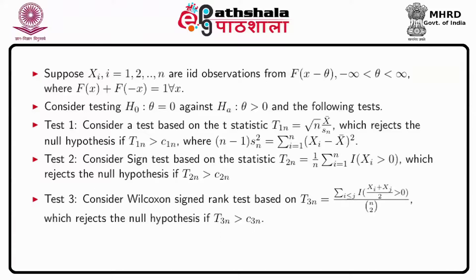For this testing problem we have three types of tests. The first is based on T1_n equal to root n times x-bar divided by s_n, which rejects the null hypothesis that theta equals 0 against theta greater than 0 when T1 is greater than C1_n, where (n minus 1) s_n squared equals the summation of (X_i minus x-bar) squared and x-bar is the sample mean.